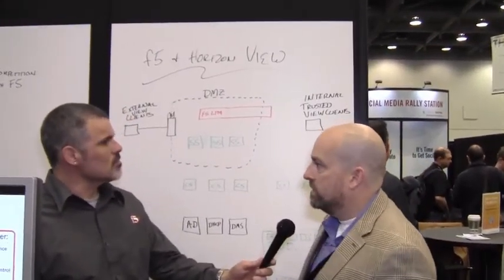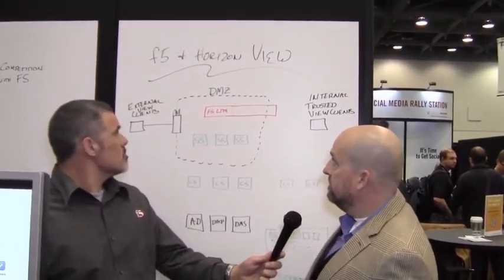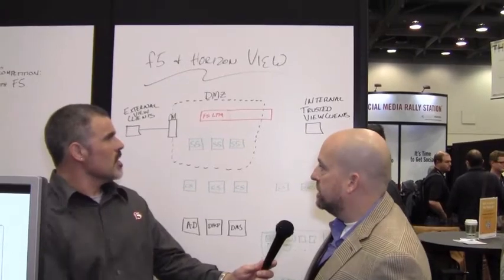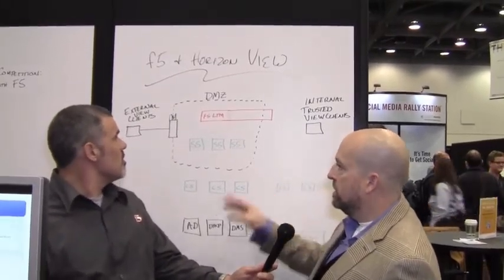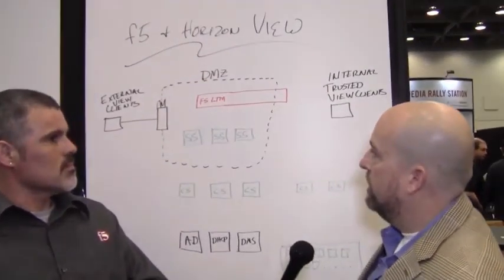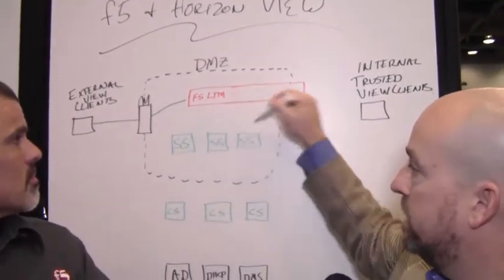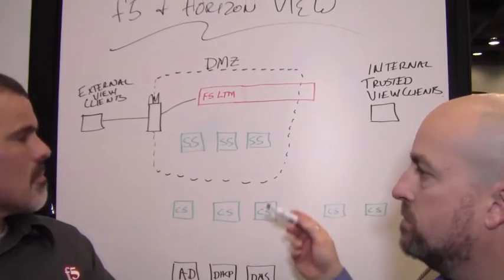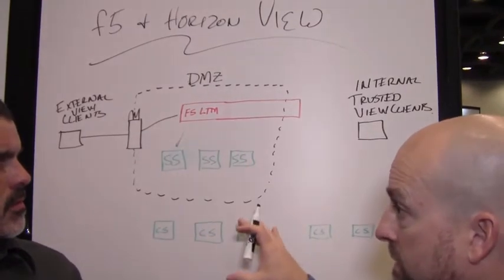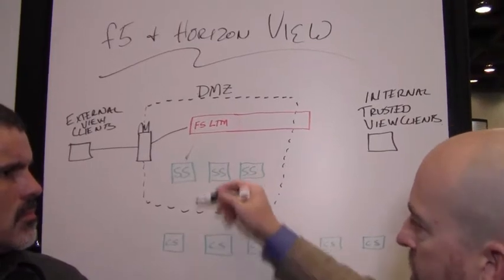What I've got here drawn is a before picture. This is the architecture you would see using an F5 Local Traffic Manager in a Horizon View deployment using security servers in your DMZ. You'd have external clients - those external clients come into the DMZ through a firewall, they talk to the F5 LTM. We make load balancing decisions about which security server to send that traffic to.